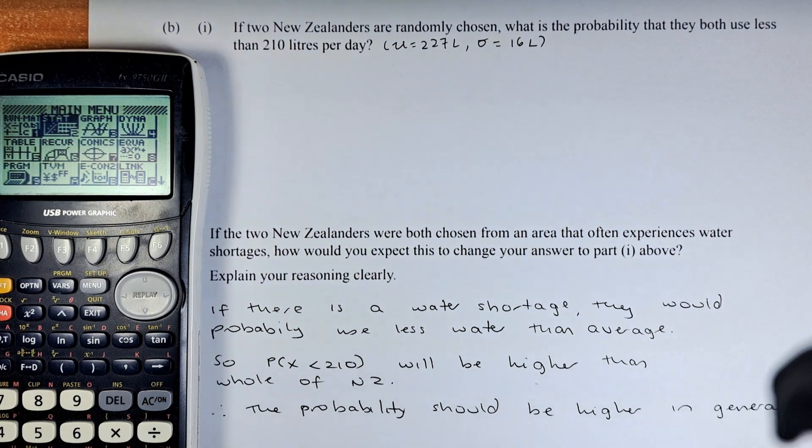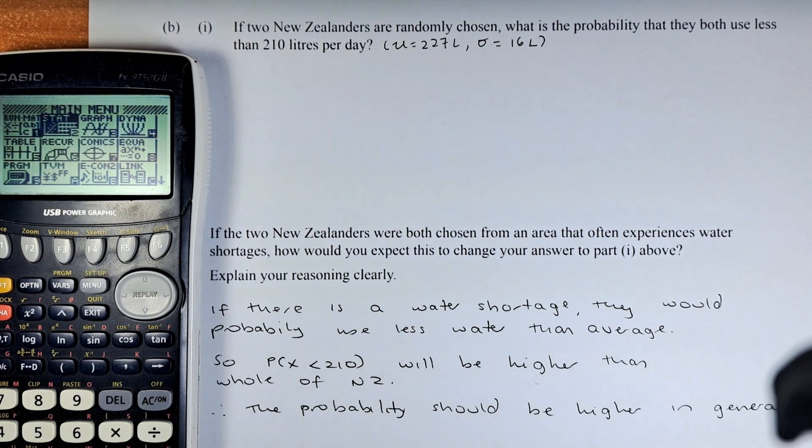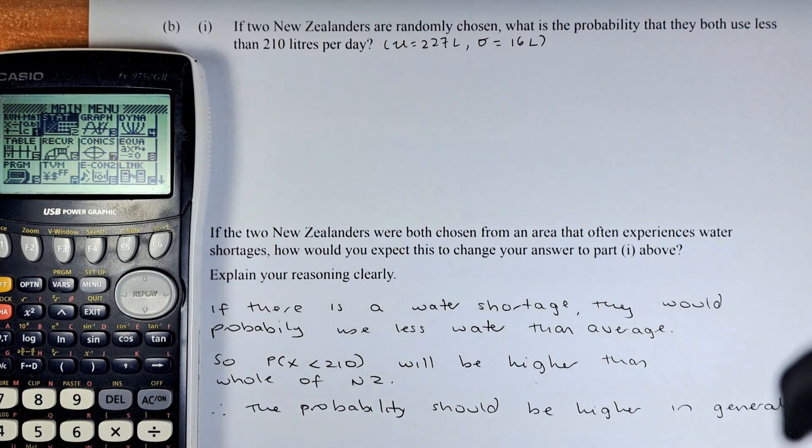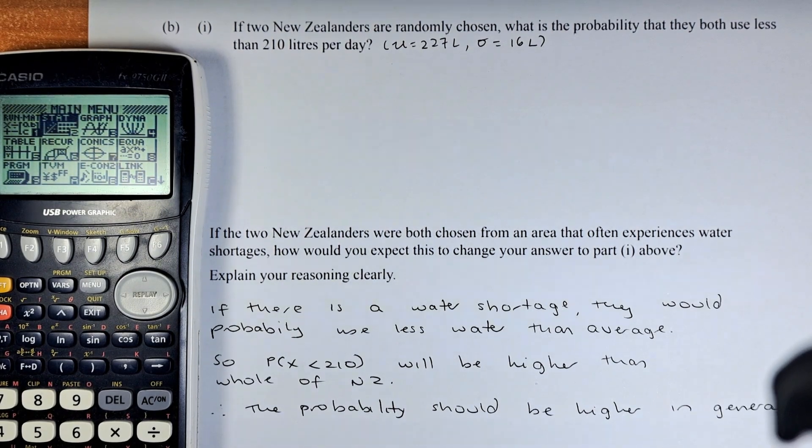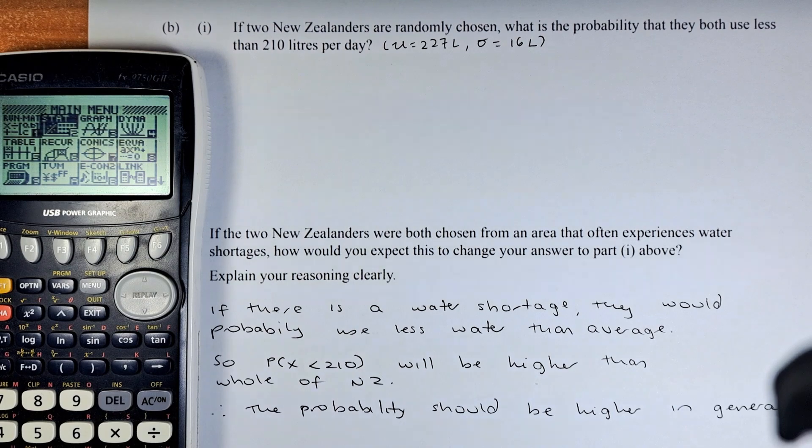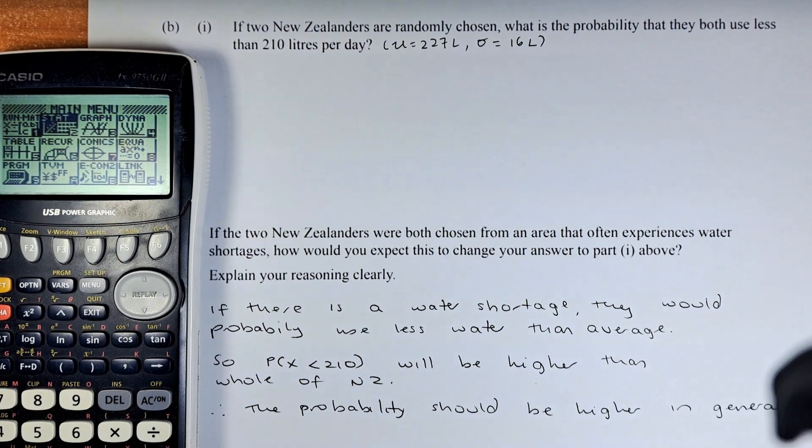If two New Zealanders are randomly chosen, what is the probability that they both use less than 210 litres per day? Based on the previous example in question 1A, the mean of the normal distribution was 227 litres and the standard deviation represented by sigma is 16 litres.